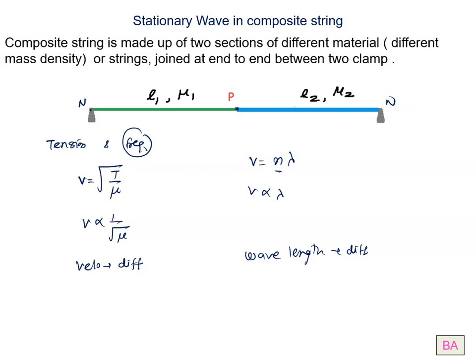Whenever you get the numerical of the composite string, keep this thing in mind. Where the string is clamped, at least node is compulsory. At P point, there may be node, there may be anti-node. We will discuss later. And in this situation, tension and frequency will be same in both the strings, but velocity and wavelength will be different.